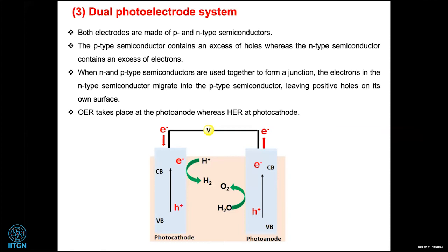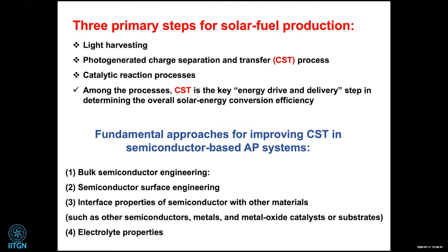You can separate the half cells or operate in tandem mode — a dual photoelectrode combination where both N-type and P-type reactions take place in the same cell. P-type semiconductor majority carriers are holes, N-type are electrons. When N and P are used together to form a junction, the story gets more complicated because charge transfer resistance also comes into the picture. Electrons in the N-type migrate to the P-type, leaving holes, so oxygen evolution takes place at the photoanode and hydrogen evolution takes place at the photocathode.